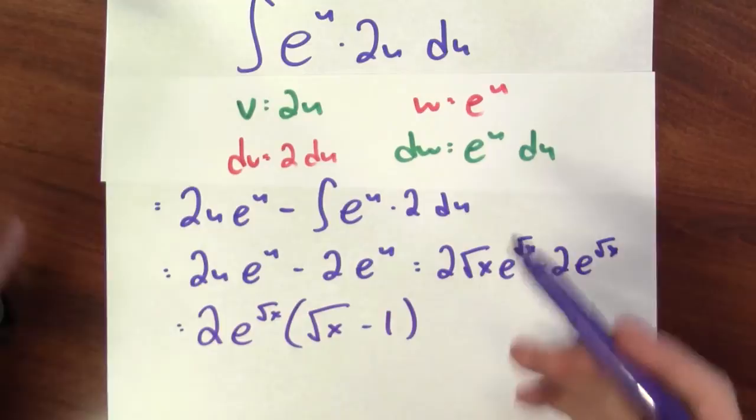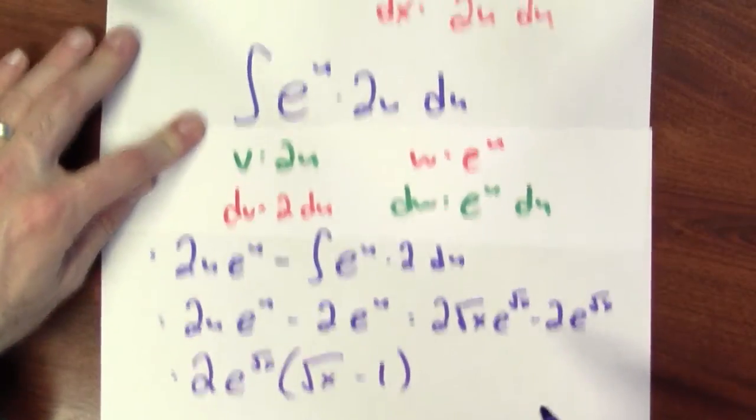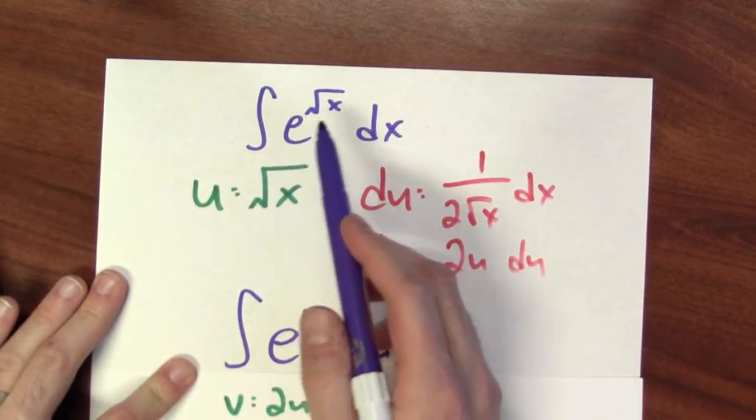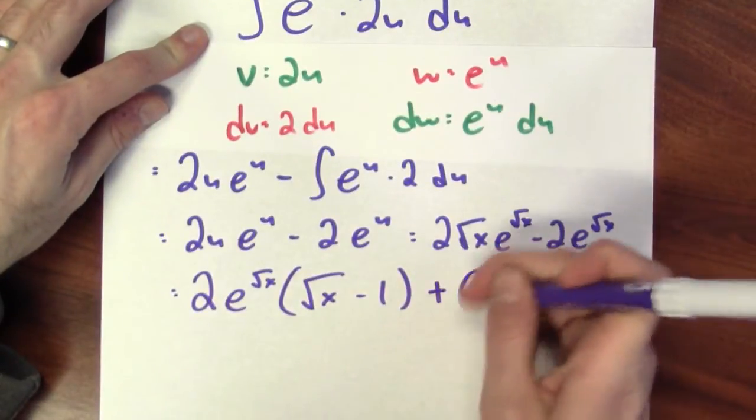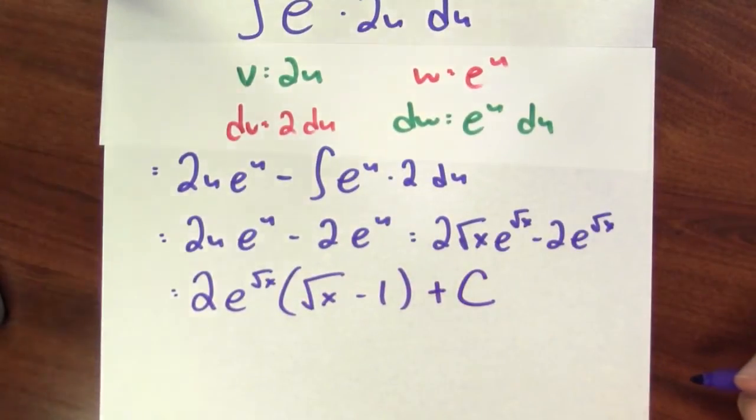And that's an antiderivative for e to the square root of x. And if I want to be a little bit more careful, maybe I'll include a plus c at the end. We did it!